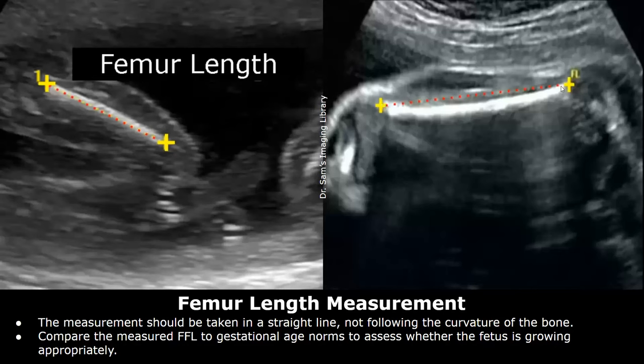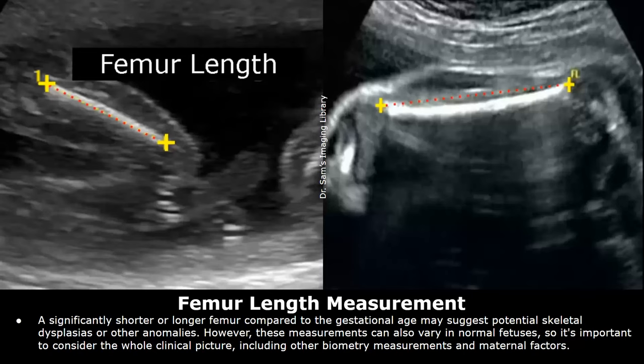After obtaining the measurement, you can compare the femur length to gestational age to assess fetal growth. A significantly shorter or longer femur length may suggest potential skeletal dysplasias, though femur lengths can vary widely in normal fetuses as well.